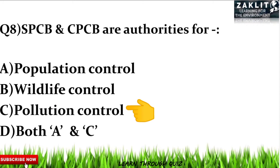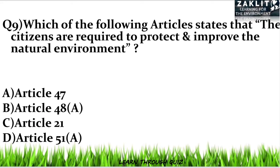The ninth question was: which of the following articles states that citizens are required to protect and improve the natural environment? The correct option is option D — Article 51A. It is a very important article to remember.